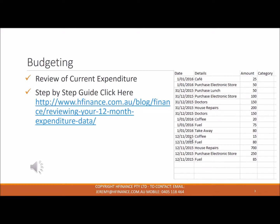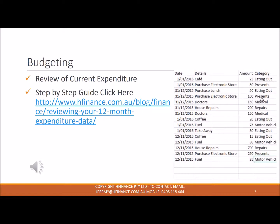What I've got in front of us here is an example of what it looks like. We've got three columns: your date, what we spent the money on, and the amount. We need to populate categories — these are an internal reference for ourselves. It's important to go through and subcategorize each of these items, as I've already done here.